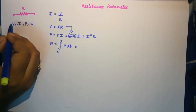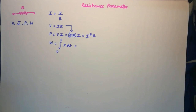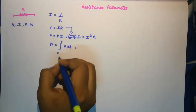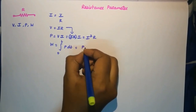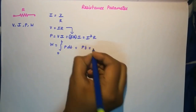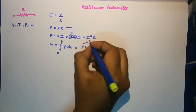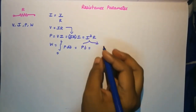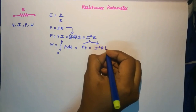Whereas for an inductor and capacitor it would vary, which we will see in upcoming sessions. When we integrate the power we get P × T, and since P = I²R, the energy is W = I²RT.